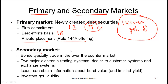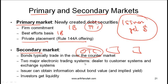The secondary market is where bonds are bought and sold between investors and dealers. The critical point is that when bonds are bought and sold in the secondary market, money does not flow to the issuer. Bonds typically trade in the over-the-counter market, where bond dealers at large banks and financial institutions buy and sell bonds, rather than on an exchange like the New York Stock Exchange.